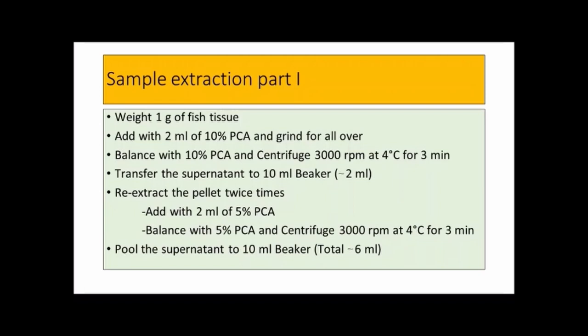Add 2 ml of 5% PCA and balance with 5% PCA. Centrifuge at 3,000 rpm again with the same conditions. Pull the supernatant to a 10 ml beaker, with a total volume of about 6 ml.